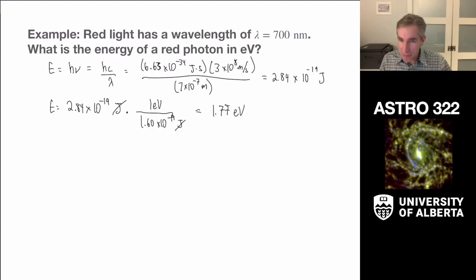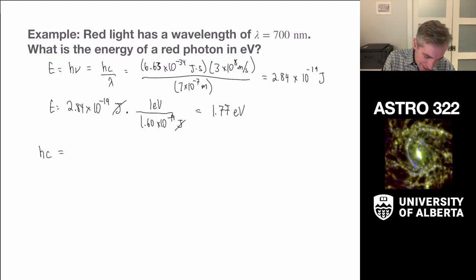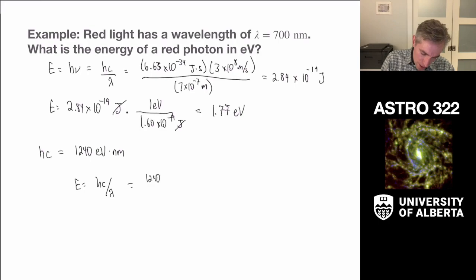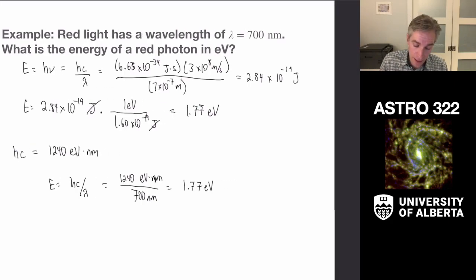A useful numerical trick: the combination of constants hc has a value of 1240 eV·nm. So the exact same problem can be solved as E = hc/λ = 1240 eV·nm / 700 nm = 1.77 eV. This shortcut is very useful for optical and infrared astronomy when we need to quickly understand the energy scales of photons.